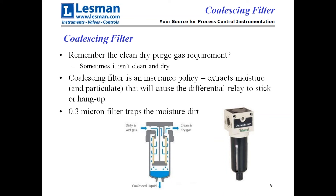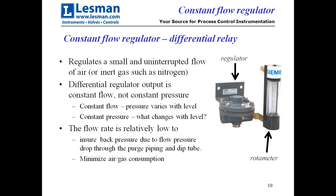The flow controller has little tiny orifices. You can't get dirt or water in there that would freeze and cause it to cease to function. Here's our constant flow regulator — the part with the diaphragm — and attached to it is a rotometer that shows the flow. It regulates a relatively small, low flow of either air or gas like nitrogen. It is a differential regulator — used to be called a differential relay — and its output is constant flow.